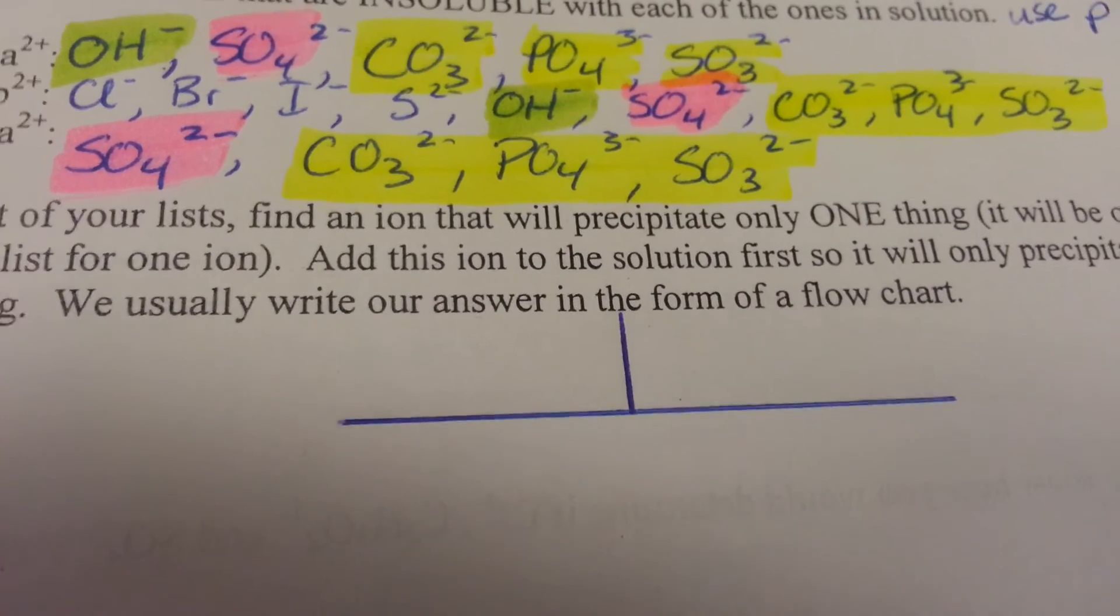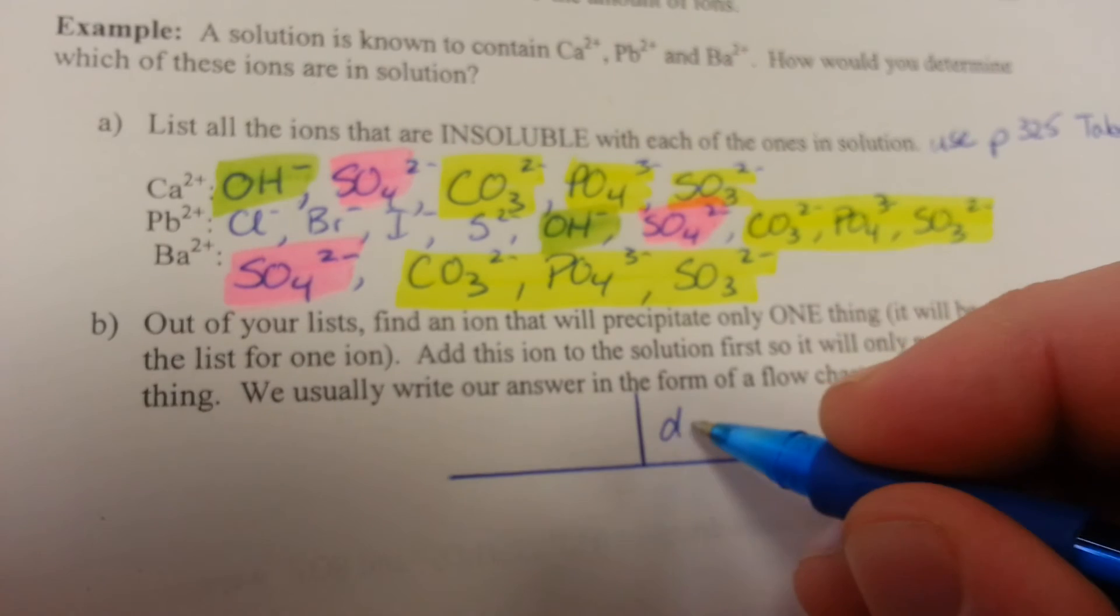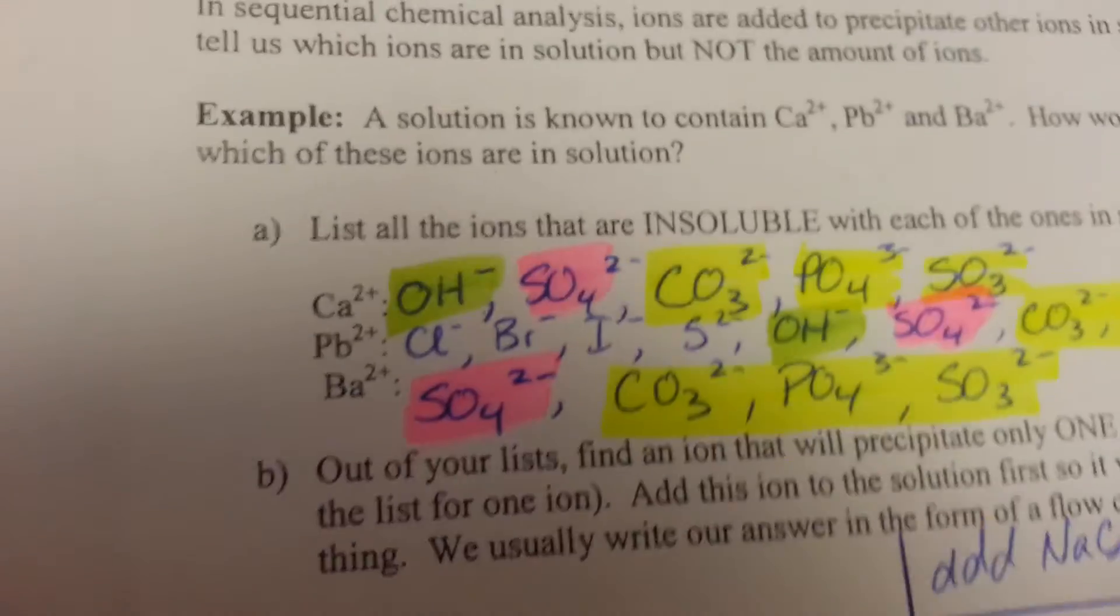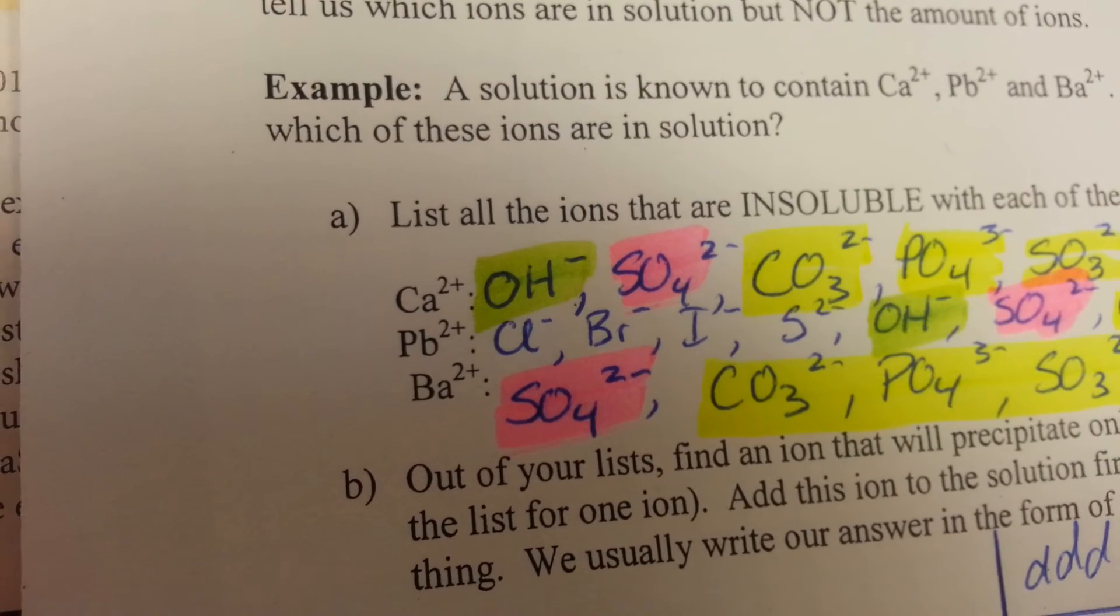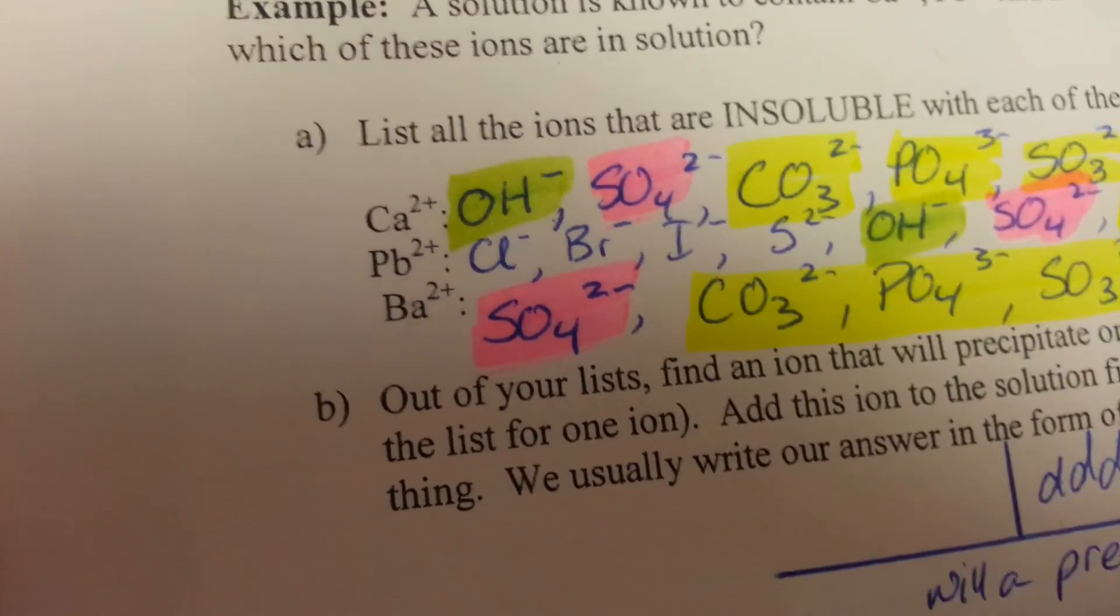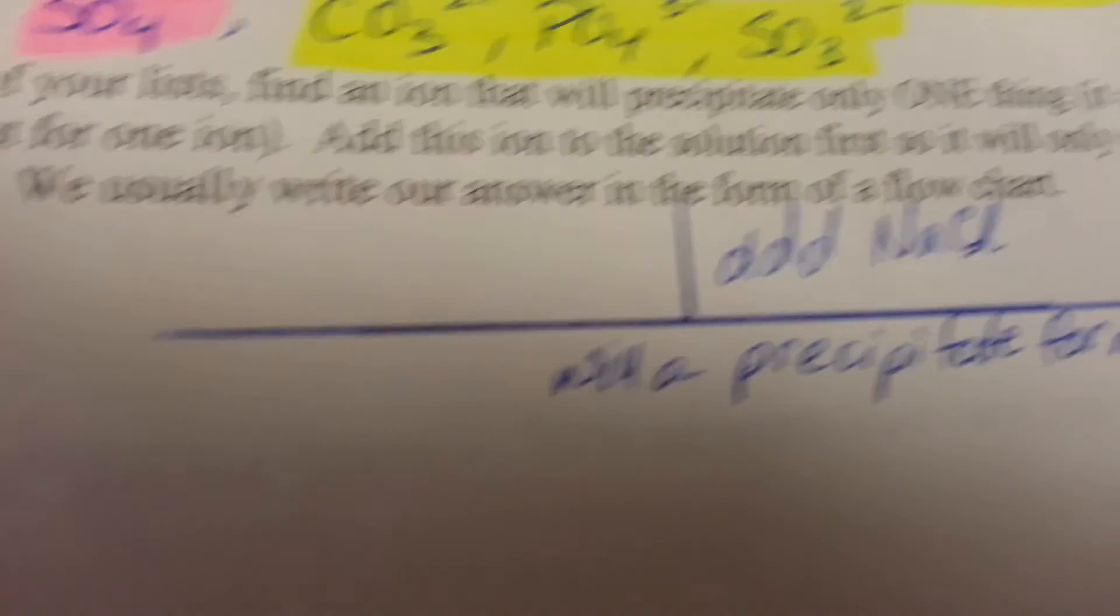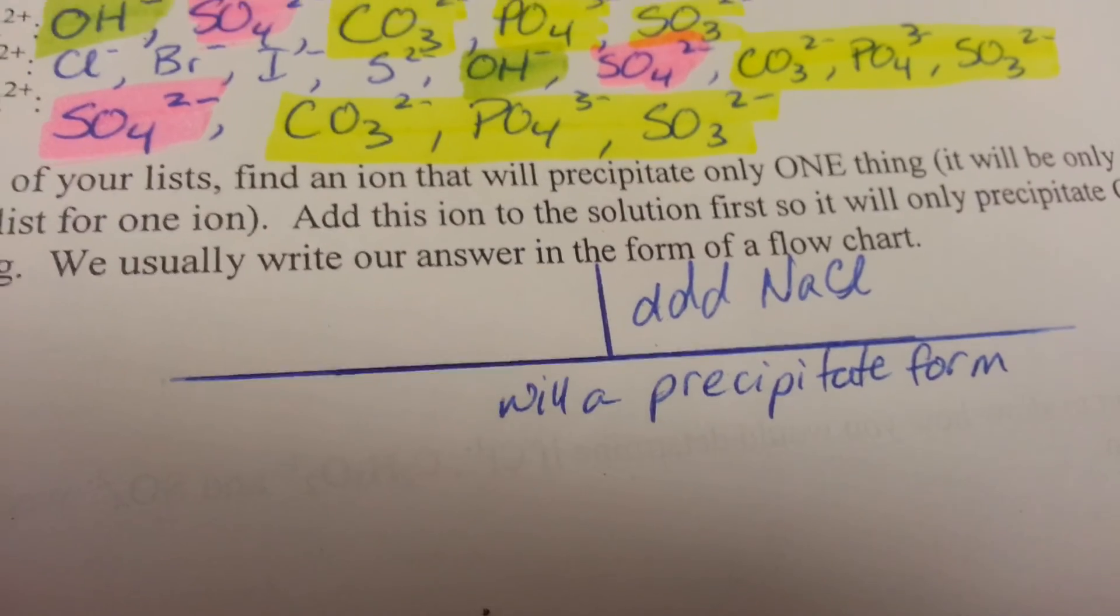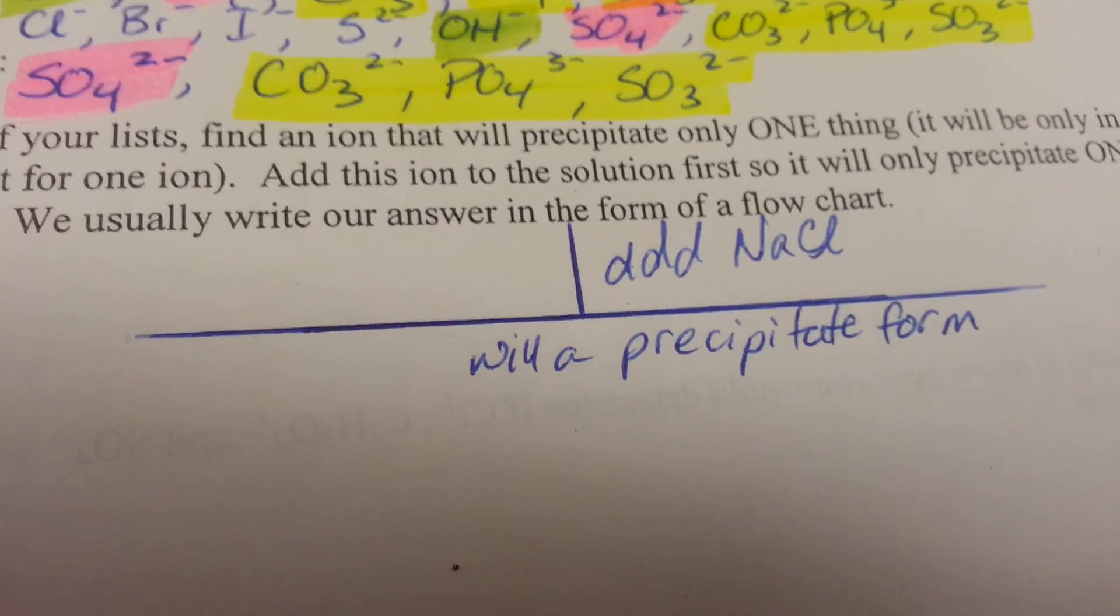My first action is to ask the question, will it create a precipitate with sodium chloride. So I need to add sodium chloride. And thus we'll ask the question, will a precipitate form? So if we add sodium chloride to a solution that possibly could contain calcium, lead, or barium, and we add sodium chloride, we have a situation where either it will create a precipitate or it will not create a precipitate. So I will just put at either end of my horizontal line, yes or no, to the question, will a precipitate form?